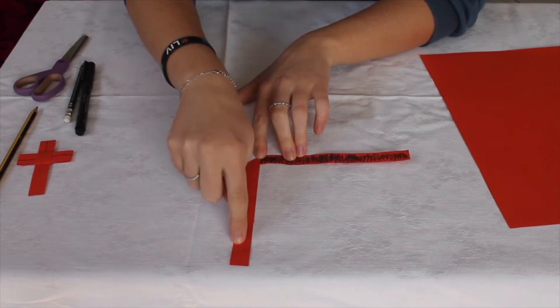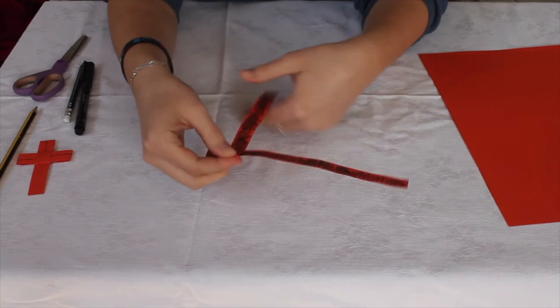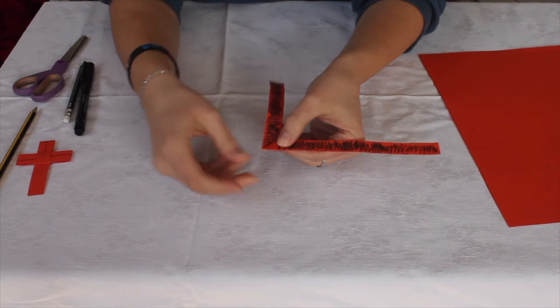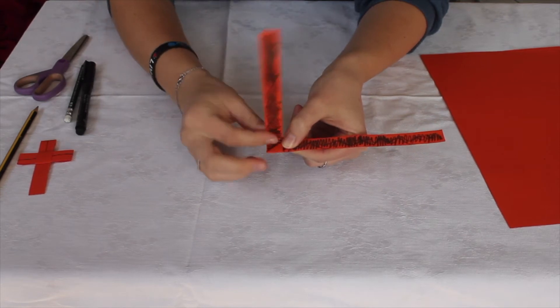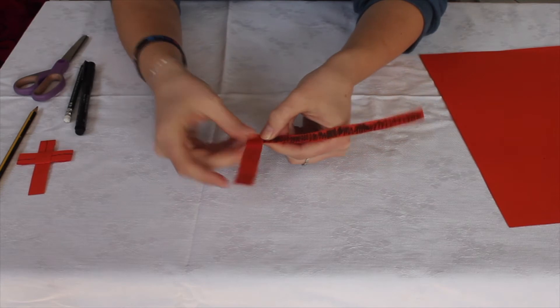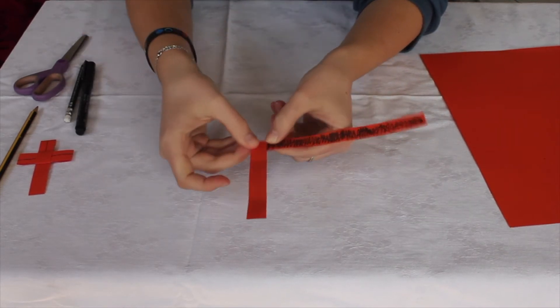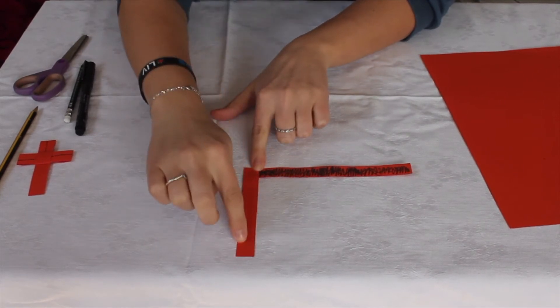We're going to take this same bit that we've just folded up and we're going to fold it back the other way like so. Still keeping our right angle and now we're going to fold it again like so. So you've wrapped it around almost and we still have our right angle.